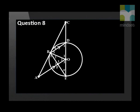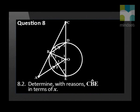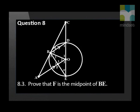ED is a diameter of a circle with center O. ED is extended to C. CA is a tangent to the circle at B. AO intersects BE at F. BD is parallel to AO. Angle E is equal to X. Write down with reasons three other angles equal to X. Determine with reasons angle CBE in terms of X. Prove that F is the midpoint of BE. Prove that triangle CBD is similar to triangle CEB. Prove that 2 times EF times CB is equal to CE times BD.